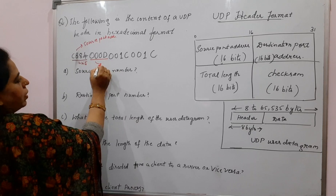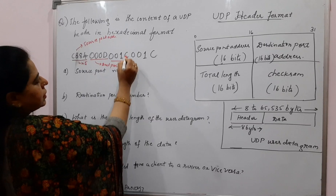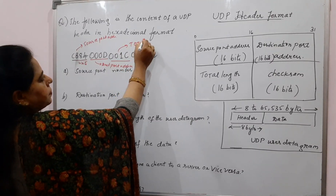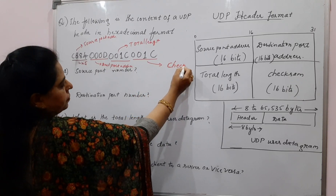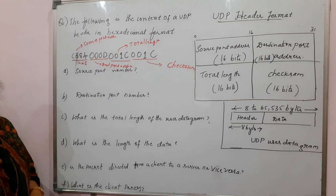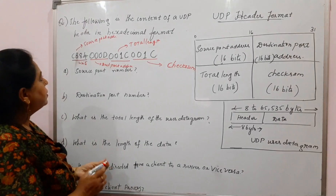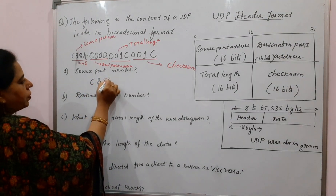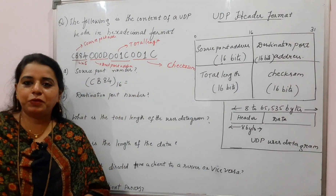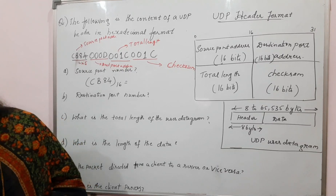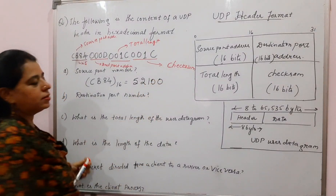The next 16 bits are for the destination port address. The next 16 bits are for the total length, and the last 16 bits are for the checksum. You just need to write down the decimal values for each field. The first one — the source port number — is given as CB84 in hexadecimal. Convert that to decimal and you get 52,100. That is the source port number.